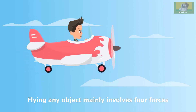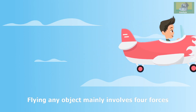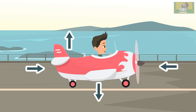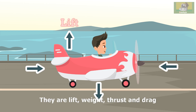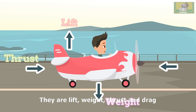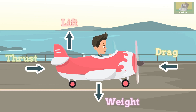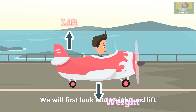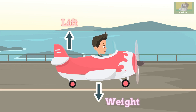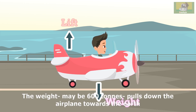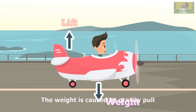Flying any object mainly involves four forces. They are lift, weight, thrust, and drag. We will first look into weight and lift. The weight, maybe 600 tons, pulls down the aeroplane towards the earth. The weight is caused by gravity pull.